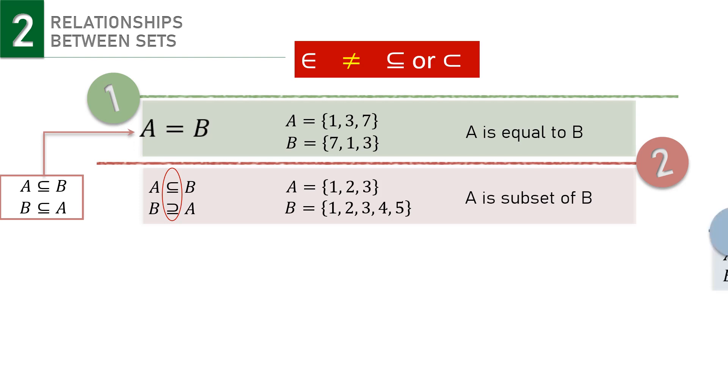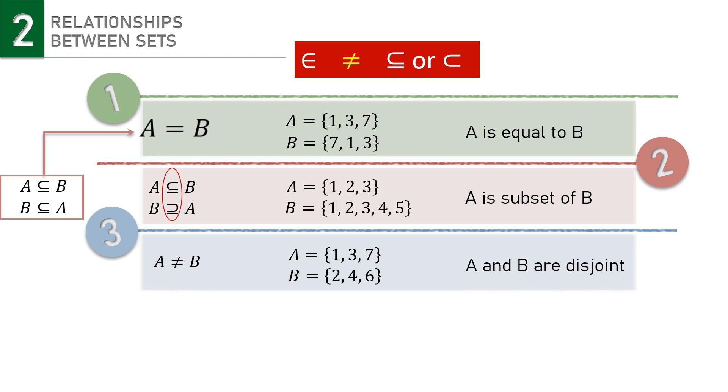The third possible relationship is this. Since the two sets have no elements in common at all, the two sets are said to be disjoint. And accordingly, A is not equal to B.